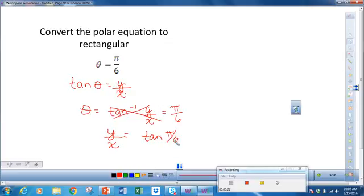Using our unit circle, we get y/x = tan(π/6) = 1/√3. So therefore, y = x/√3.